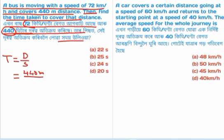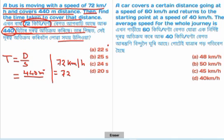The speed is 72 kilometers per hour. To convert, we use the factor 5/18 to get meters per second. So 72 km/h multiplied by 5/18 gives 20 meters per second. The distance is 440 meters, so time equals distance divided by speed: 440 divided by 20 equals 22 seconds.